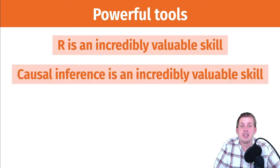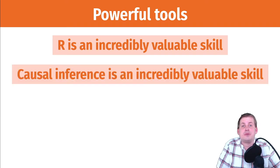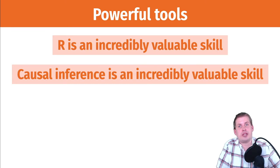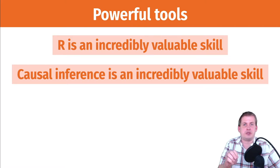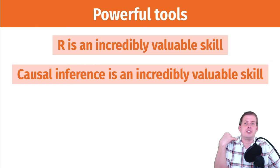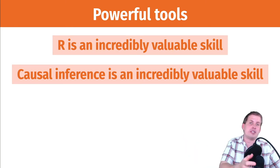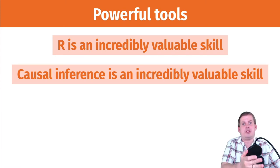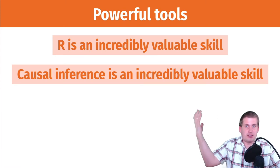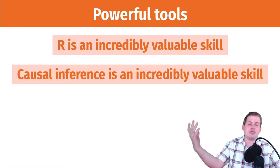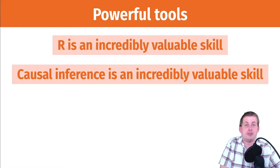R is an incredibly valuable skill. Causal inference specifically is a very valuable skill — organizations are very interested in the causes of things. Even political campaigns will do all sorts of randomized control trials, they call them A/B tests, where they put different users in an A group and a B group and manipulate one thing to see which is more effective. For example, a campaign might change the color of a donate button and see which gets more donations — that is a causal question.